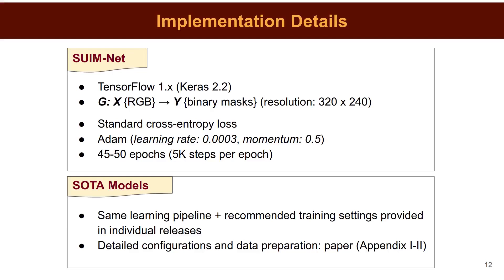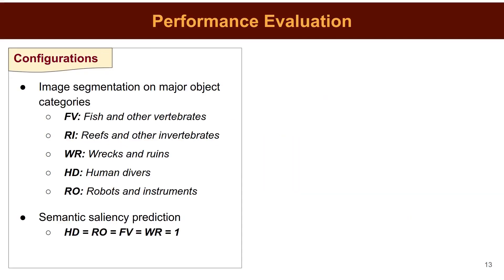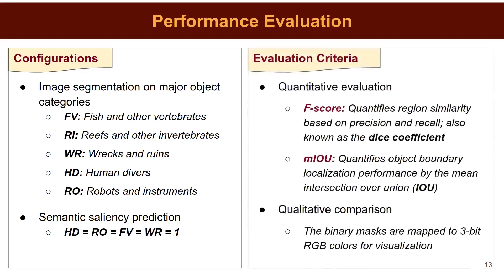We use the same learning pipeline for the state-of-the-art models as well, but with recommended training settings provided in their individual releases. Detailed configurations and data preparation processes can be found in the appendix section of the paper. We conduct performance evaluations for image segmentation on five major object categories: fish, reefs, human divers, wrecks or ruins, and robots. We also show performance comparison for binary saliency prediction with four object categories. We evaluate and compare performance using two standard metrics: F-score and MIOU.